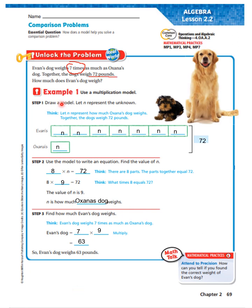It says use a multiplication model — draw a model, and let N represent the unknown. Let N represent how much Oxana's dog weighs. Together the dogs weigh 72 pounds. We do not know how much Evan's dog weighs; we just know it's seven times as many as Oxana's. So we have seven boxes with N's. We know that Oxana's dog is also an N, but combined the dogs weigh 72 pounds.